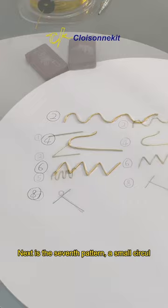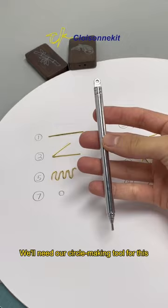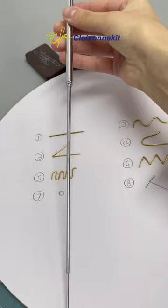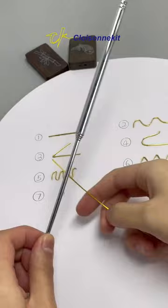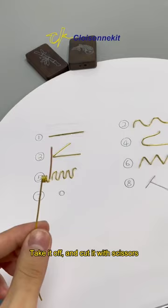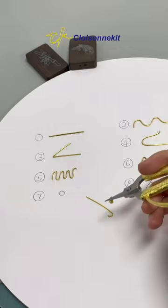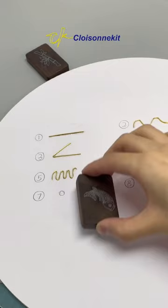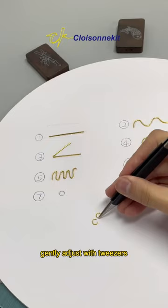Next is the seventh pattern, a small circle. We'll need our circle-making tool for this. Find a section with a diameter close to the circle. Wrap the gold wire on it. Take it off and cut it with scissors. Flatten it with the wire straightening board. Gently adjust with tweezers.